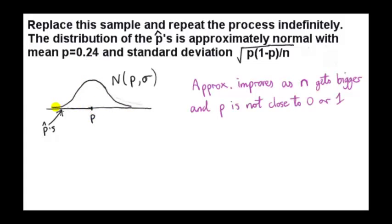It can be shown that the distribution of the P hats is approximately normal with mean equal to the unknown population proportion. The mean is normally denoted by μ, and σ the standard deviation is given by this formula here.